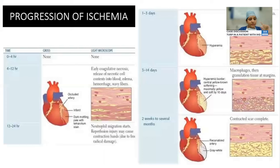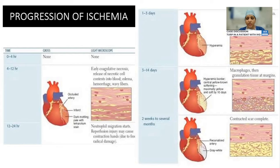The progression of ischemia: in the first four hours, there are no significant pathological changes. Subsequently, early coagulative necrosis develops with inflammatory cell infiltration. Inflammation surrounds the area of coagulative necrosis, which becomes more severe with neutrophil infiltrate, progressing to macrophage infiltrate. Granulation tissue forms at the margins, and over two weeks to a few months, a contracted scar is complete.